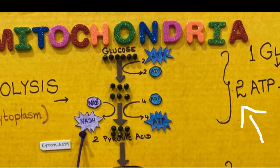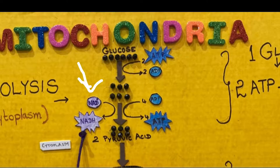There's a net gain of two ATP. Four electrons are given to an electron carrier called NAD+, which is converted into NADH, used later in the electron transfer chain. But mitochondria don't want none unless you got oxygen.